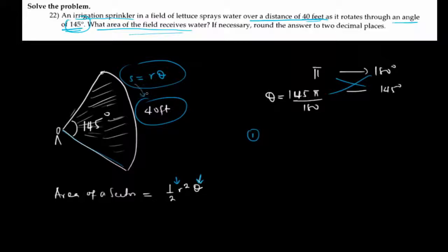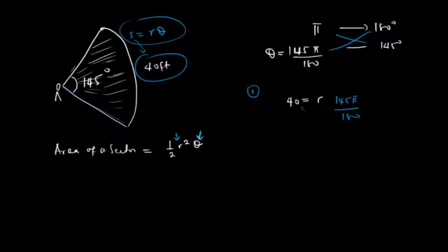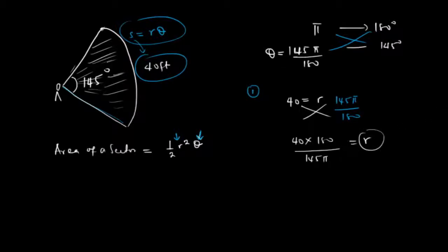So our theta is 145π divided by 180. To find r, we cross multiply: r = 40 times 180 divided by 145π. So this is going to be our r. When you simplify that using your calculator, r = 40 × 180 / (145π), which gives you approximately 15.86 feet.